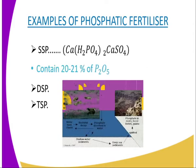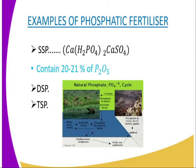Examples of phosphatic fertilizer: we have SSP, that is single superphosphate fertilizer. Its formula is shown on screen and it contains 20 to 21% of phosphorus pentoxide (P₂O₅). The second is DSP, that is double superphosphate fertilizer. And lastly, we have TSP, standing for tri-superphosphate fertilizer.